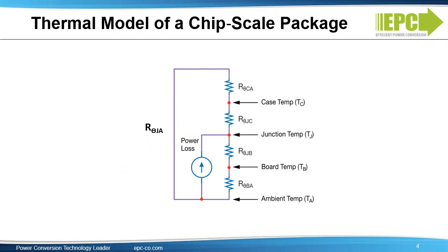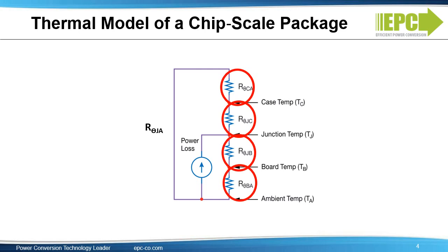The junction-to-case thermal resistance is defined as the resistance from the active surface of the die to the case, which is the top surface of the substrate for a chip-scale GaN transistor. The junction-to-board thermal resistance, R-theta-JB, is the thermal resistance through the solder bumps or solder bars from the active surface of the transistor to the copper traces on the PCB. In series with both of these resistances are the board-to-ambient and case-to-ambient resistances. These resistances tend to be high value compared to R-theta-JC and R-theta-JB.